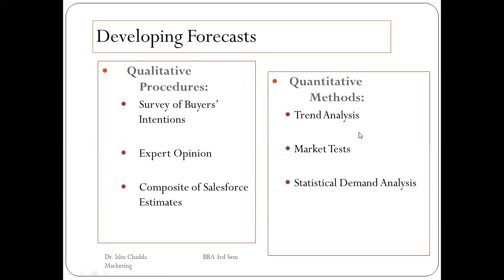Developing forecasts: there are two approaches. The qualitative procedure involves observed methods where you cannot quantify data — you survey buyers' intentions, use expert opinions, and use a composite of sales force estimates. The quantitative method involves quantifying the data using trend analysis, market tests, and statistical demand analysis — you follow a data approach, quantifying your data by examining profit analysis or trend analysis.